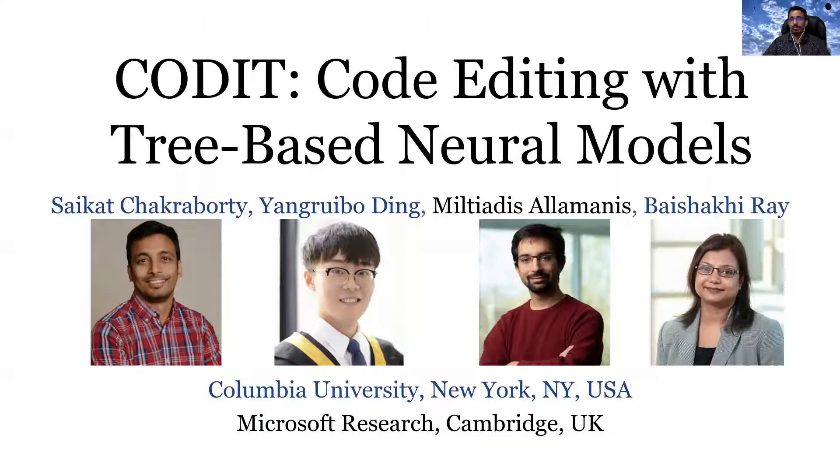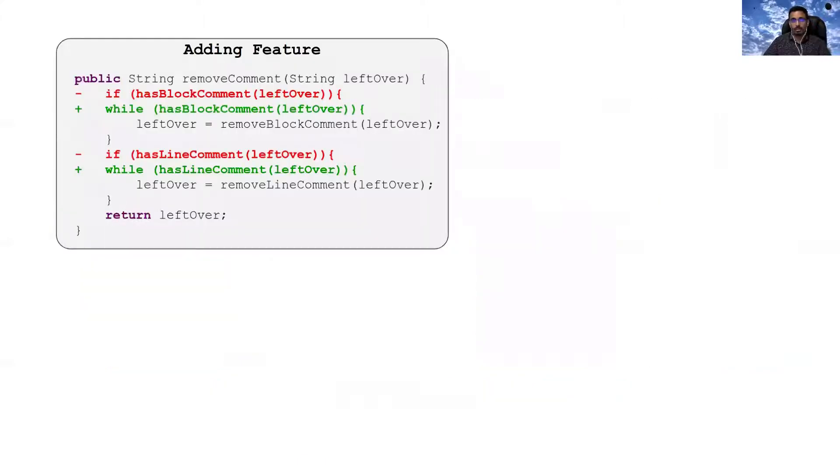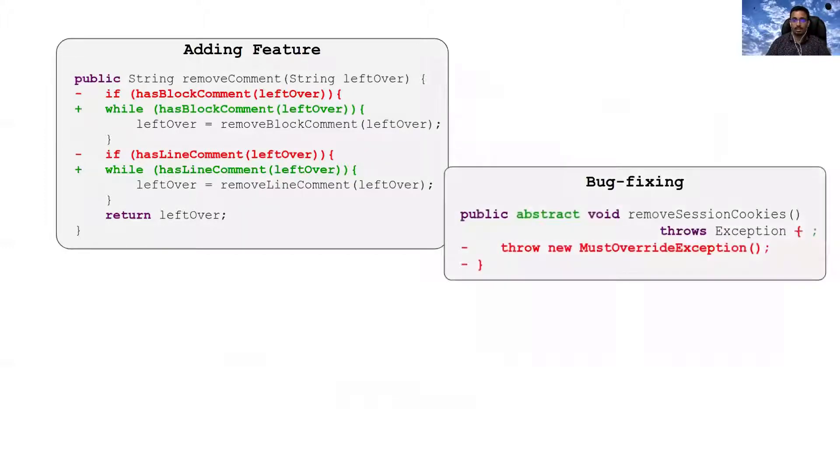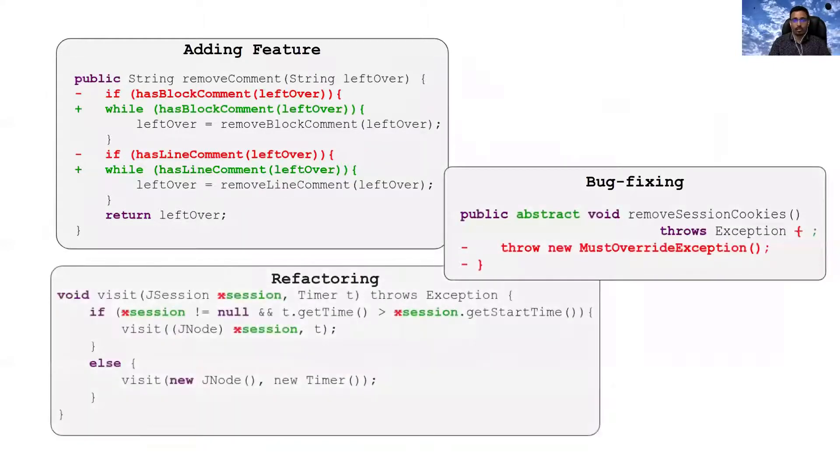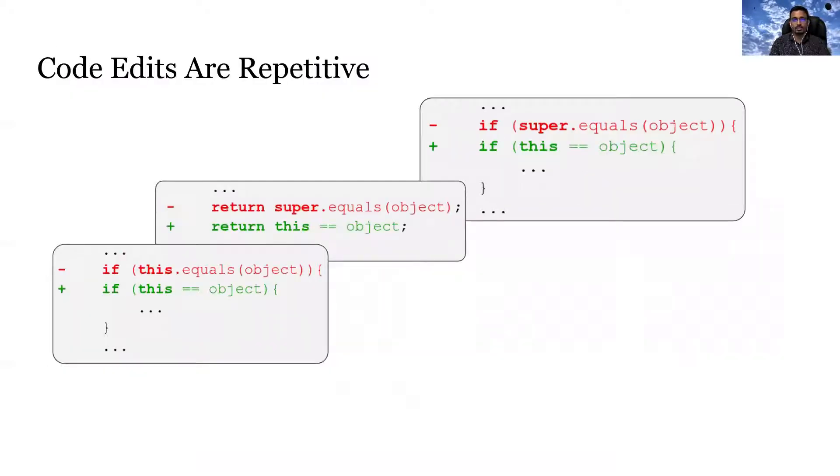Before moving into this paper, let us talk about the motivation behind this work. Software developers change their source code for different purposes. For instance, they edit code for adding new features, bug fixing, and refactoring. As it turns out, these code edits are very repetitive. That is, the developer reuses the same pattern of edit in different contexts over and over again.